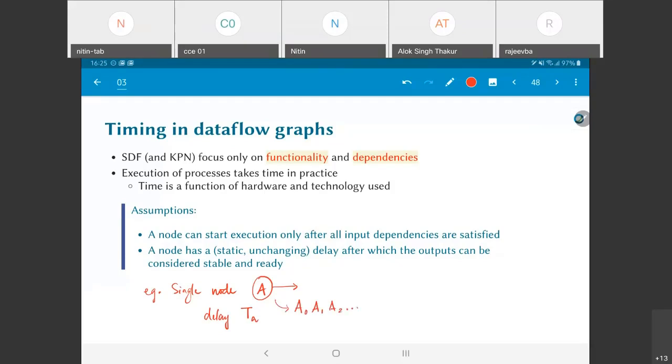And there are different ways of looking at this. One of them would be to say that the first execution of A, that is A naught takes TA amount of time. Then the next execution takes TA amount of time again, the next execution takes TA amount of time, etc. This is when you have everything happening sequentially one after the other.